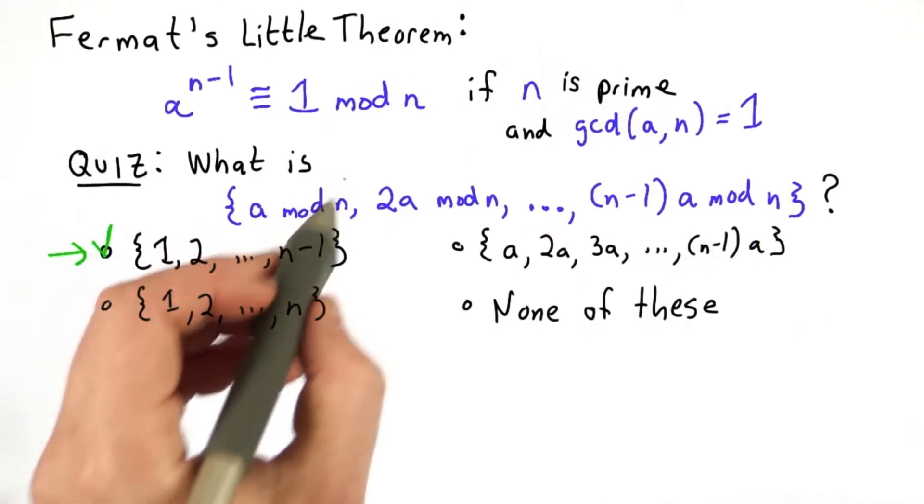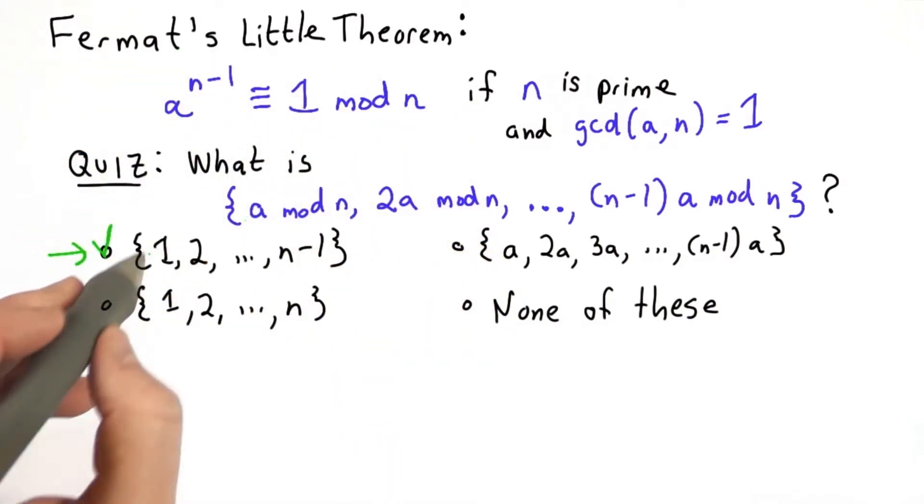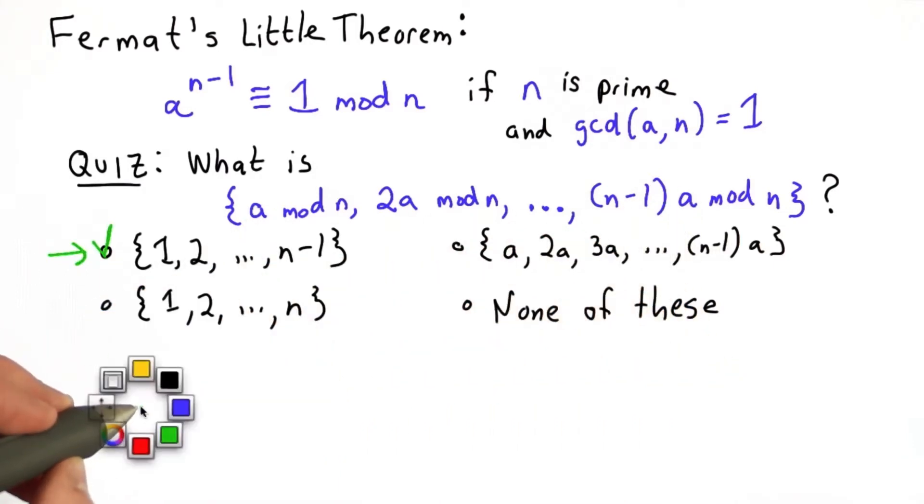This turns out to be a useful property for proving Fermat's Little Theorem because we can set these two things as equal and multiply all the elements in those sets. So since we know they're the same set, we know that their products are also equal.